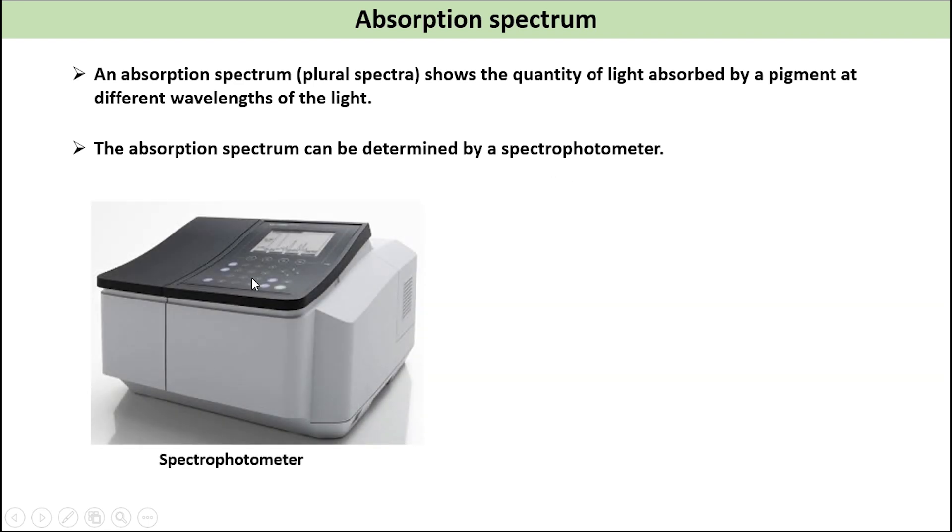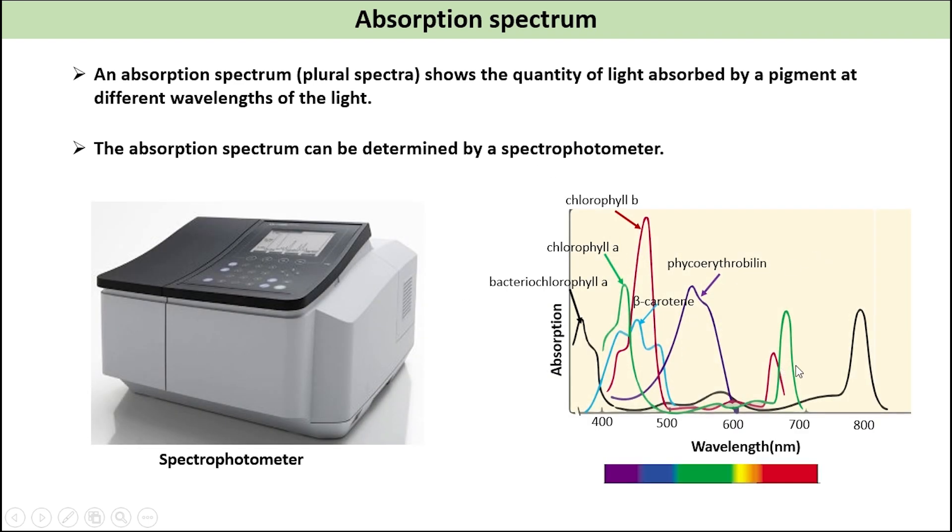This graph is showing absorption spectrum of different pigments at different wavelengths. As we can see, absorption occurs in chlorophyll A, chlorophyll B, at blue and red region. At green region no absorption occurs because chlorophylls reflect green color and it appears green. As we can see, no absorption peak in green part.